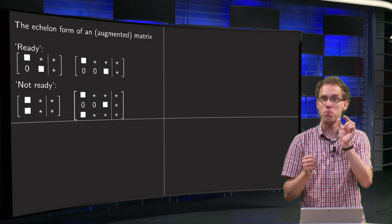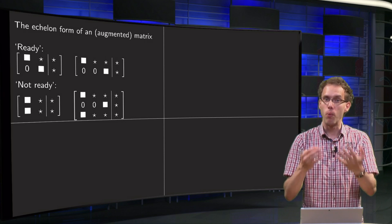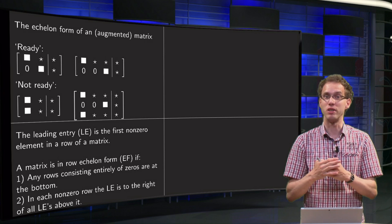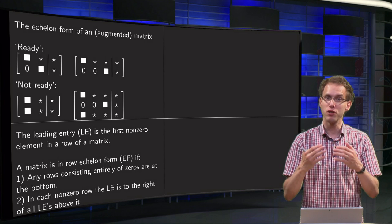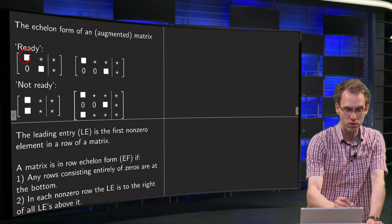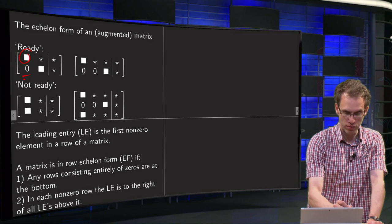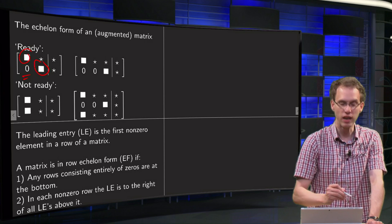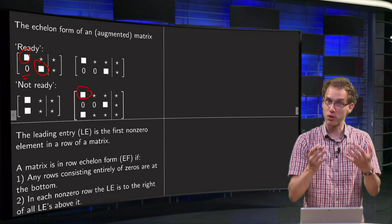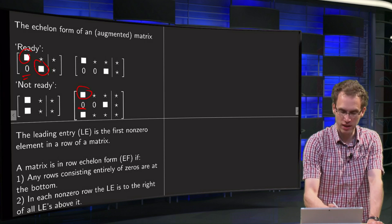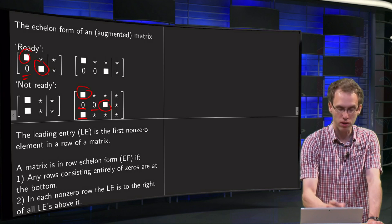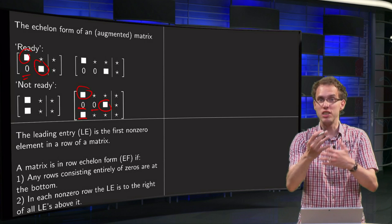Let's formalize that a bit. In order to define what the staircase is, I need to tell you what the squares are. Those are the first elements in the row which are non-zero, and those are called the leading entries. The leading entry of a row is the first element in that particular row which is not zero. For example, in the first matrix, the first element is not zero, so that will be my leading entry. In the second row, first we have zero — so that is not the leading entry — and this non-zero element is. In another example, if the first element is already non-zero, that's the leading entry. If we have zeros first, we skip them until we reach a non-zero block, and that is the leading entry.